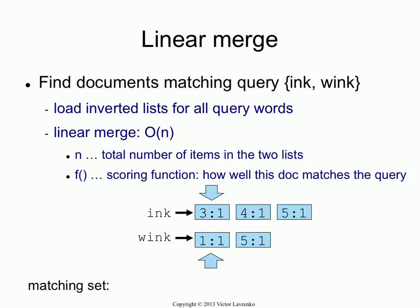Why do you need linear merge? If your query was a single word, getting the matches is trivial — you just look up the inverted index and there are your matches. But what if you have a multi-word query — two or three words? How do you get a list of matches? That's where you need linear merge. You pull up the inverted index for 'ink', pull up the inverted index for 'wink', and then do the basic linear merge.